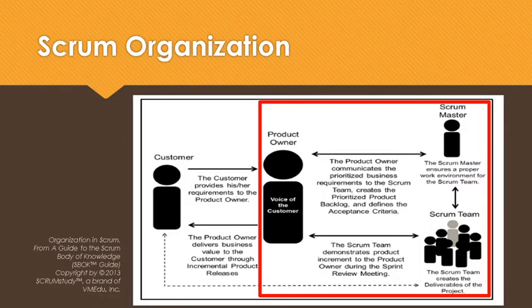In understanding Scrum, we also need to understand and define the roles and responsibilities in the Scrum project team. This is very important for ensuring the successful implementation of Scrum. The roles in Scrum fall into two broad categories: core roles and non-core roles.